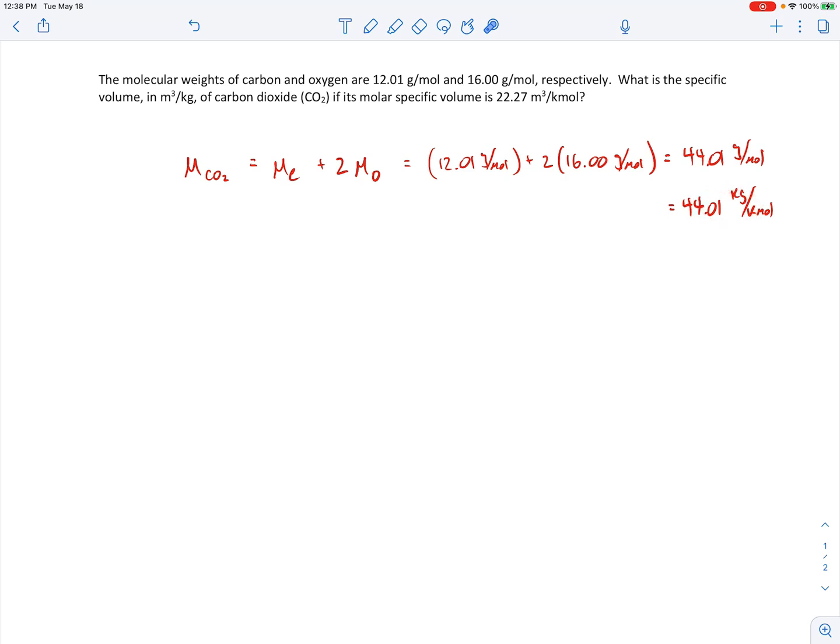And then to find the specific volume in terms of cubic meters per kilogram, so converting it from the 22.27 cubic meters per kilomole, what we're going to do is take this and divide it through by the molecular weight. So let me just show you that. So here's the specific volume. It's going to be the molar specific volume divided by the molecular weight of carbon dioxide.